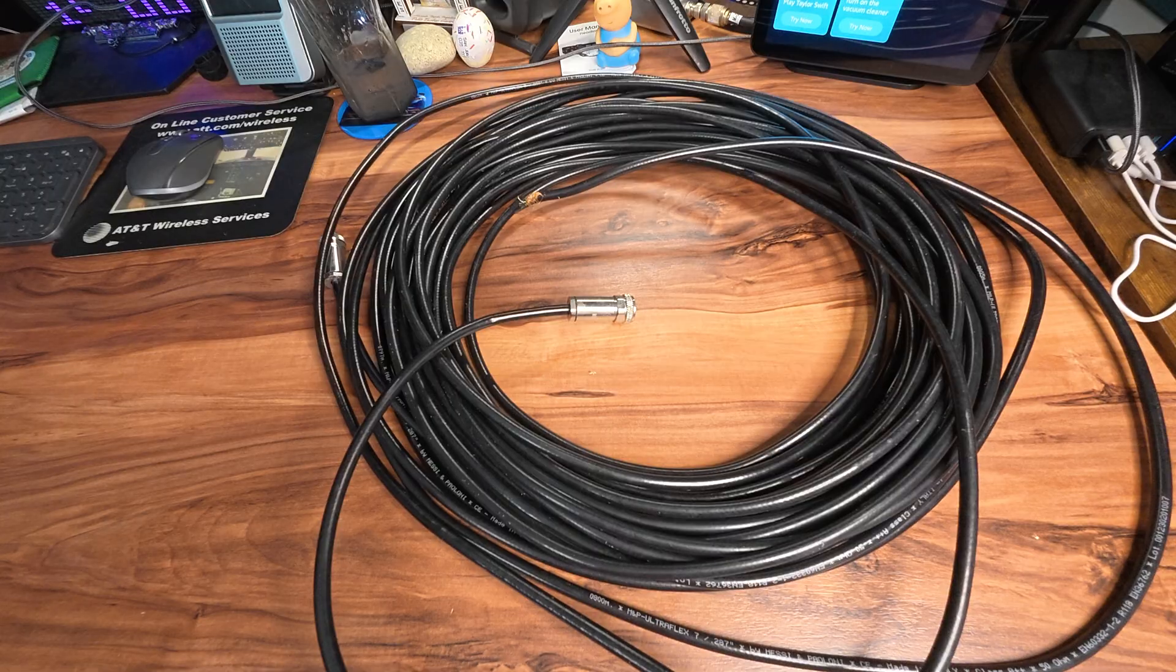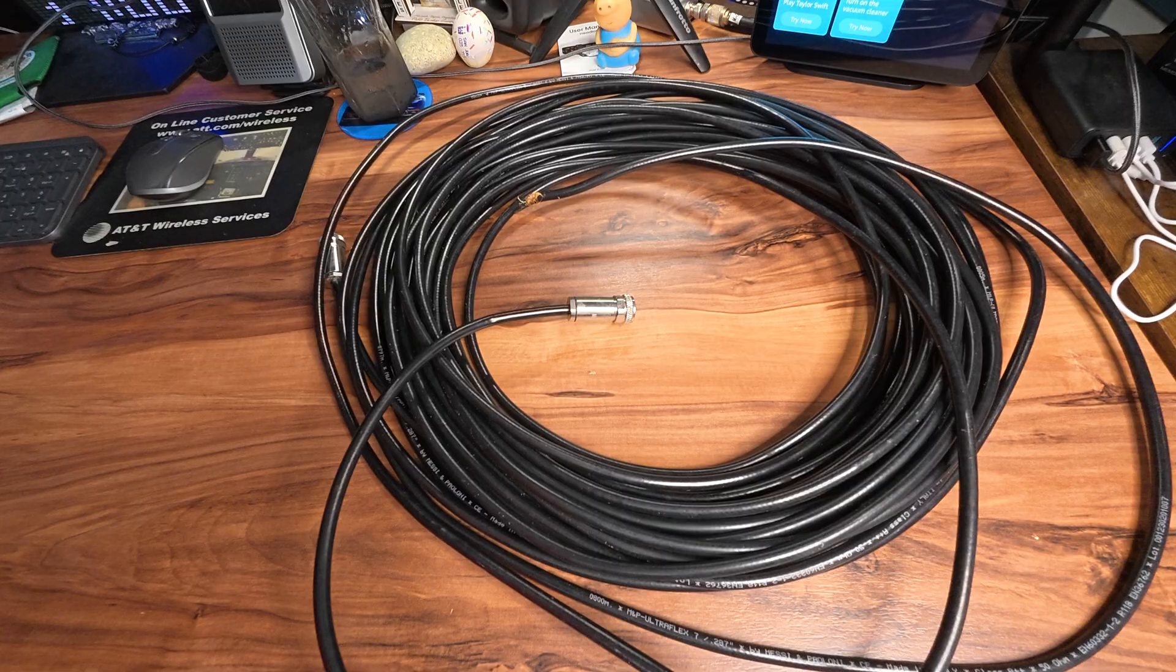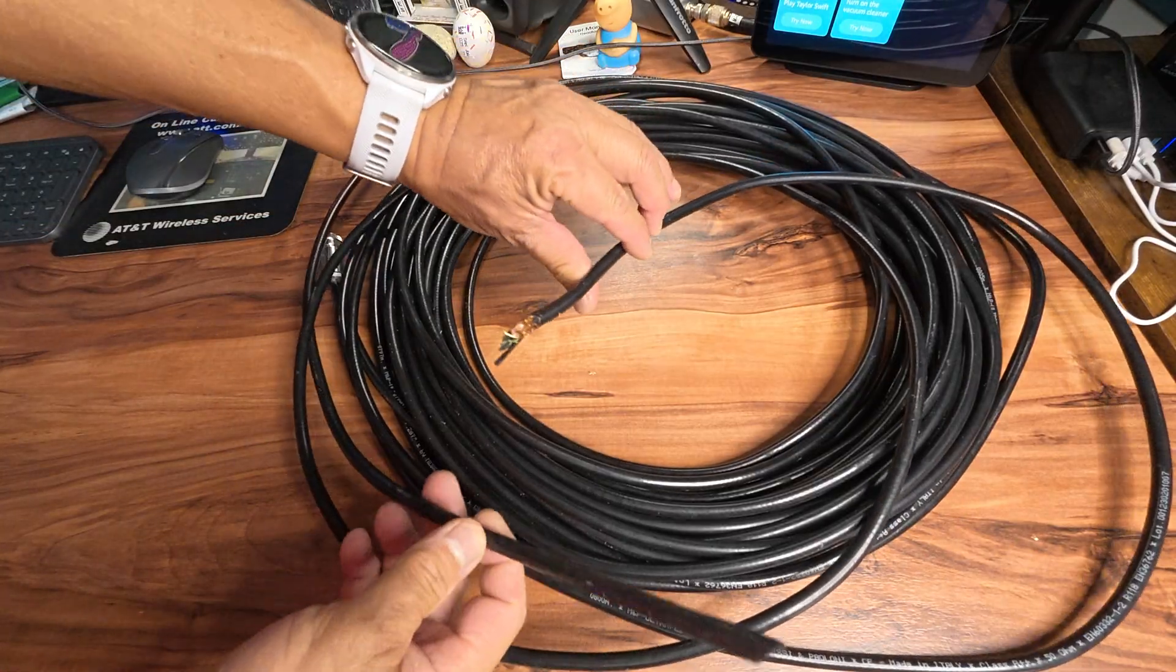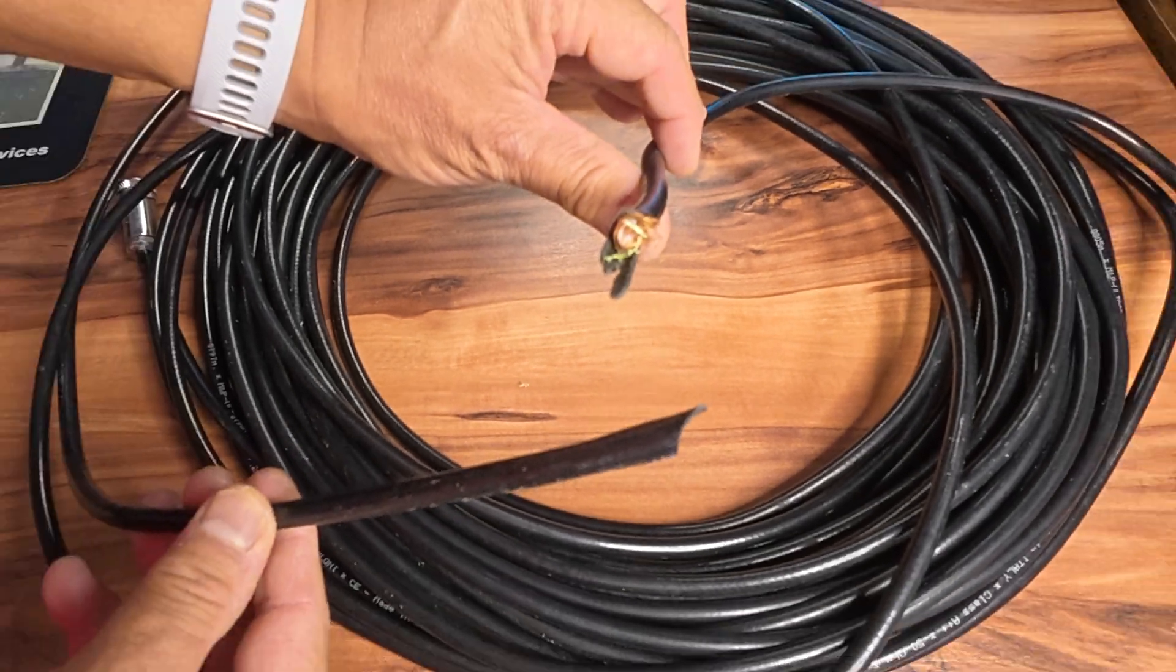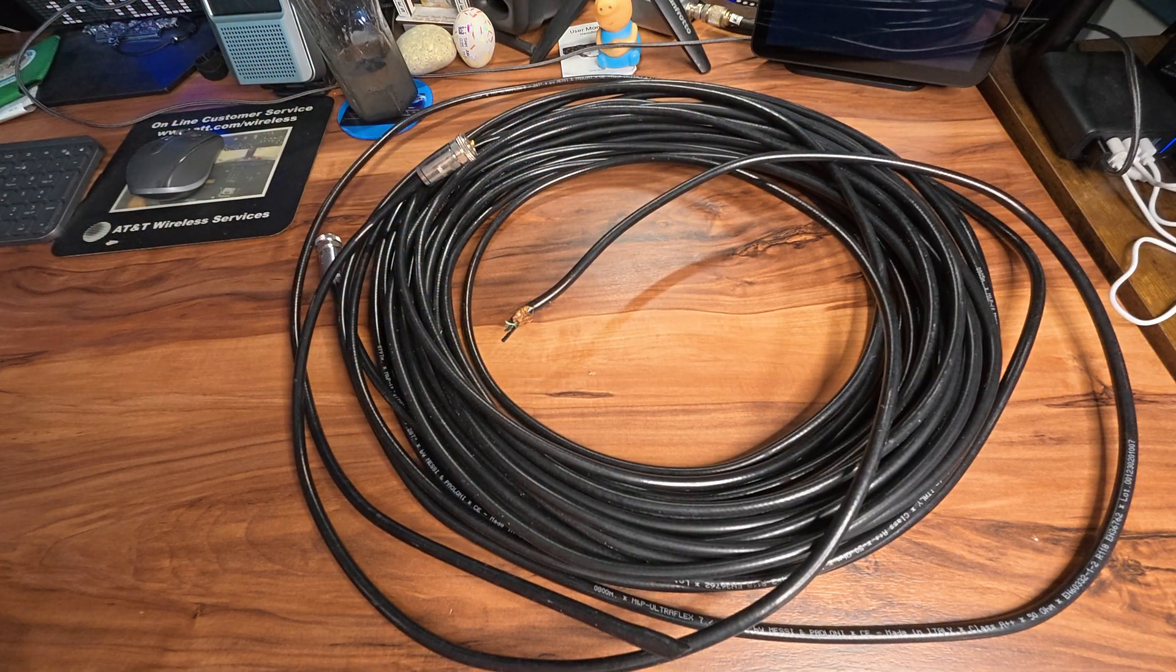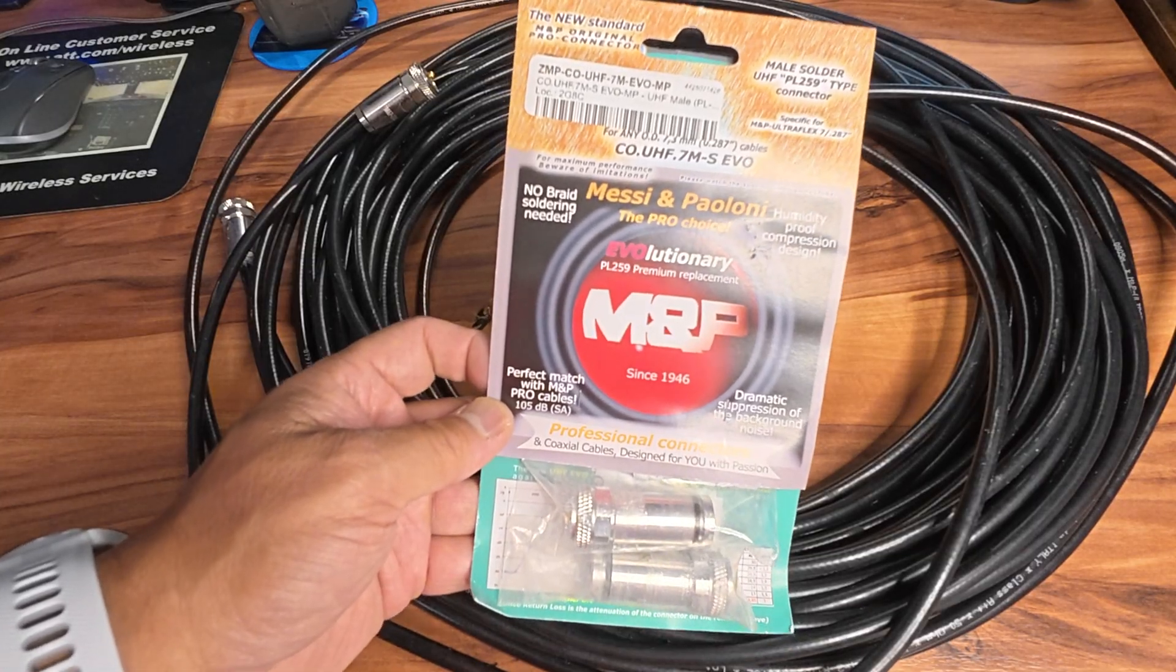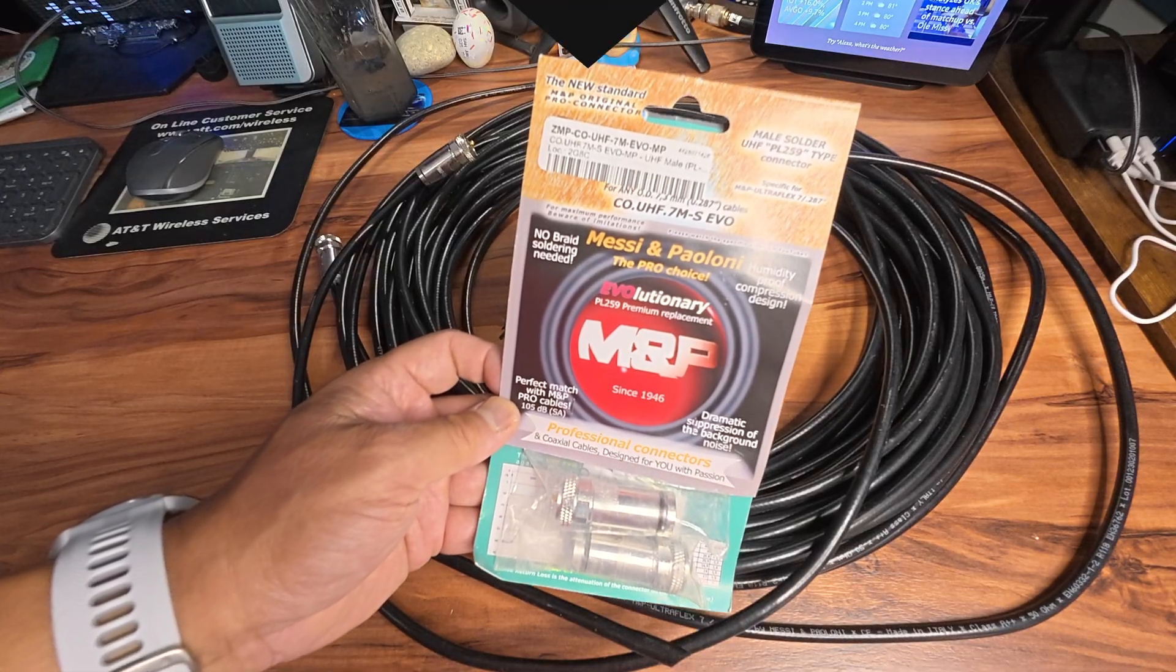These are the Messi and Poloni Ultraflex 7. I actually used this cable when I built my loop on the ground. And then a week or two weeks later I went to mow the grass and the mower cut the cable somewhere in the middle. So what I'm going to do is show you how to put the PL259 and connect it to a Messi and Poloni cable.